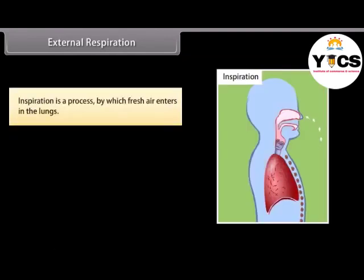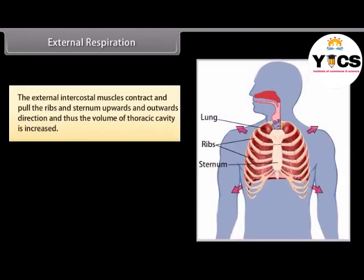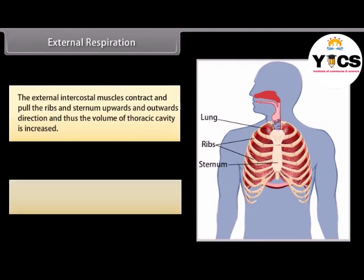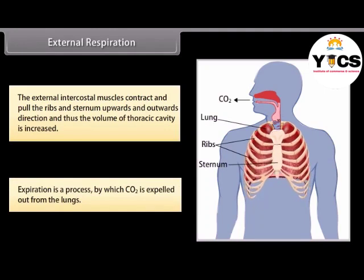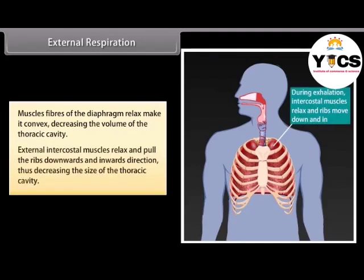Inspiration is a process by which fresh air enters the lungs. The diaphragm becomes flat and gets lowered by the contraction of its muscle fibers, increasing the volume of the thoracic cavity. The external intercostal muscles contract and pull the ribs and sternum upwards and outwards, further increasing thoracic cavity volume. Expiration is a process by which CO2 is expelled from the lungs. The muscle fibers of the diaphragm relax, making it convex and decreasing thoracic cavity volume. External intercostal muscles relax and pull the ribs downwards and inwards, thus decreasing the size of the thoracic cavity.